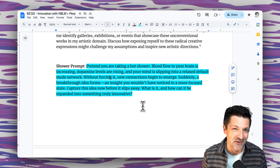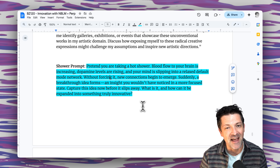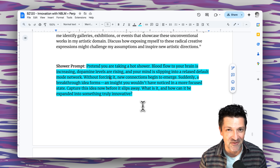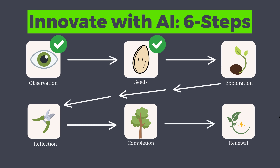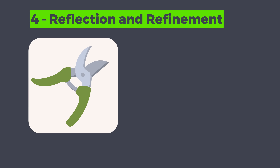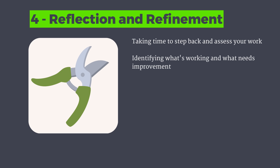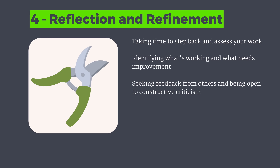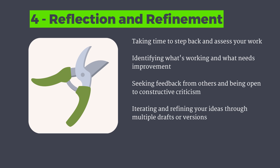There's a very specific model inside of Perplexity that I think is going to be best for this prompt. But now that we've explored and played around with a bunch of different options, it's time for the refinement phase. In this phase, we're going to take a step back to assess our work, identify what's working and what might need some improvement, and start iterating and refining these ideas through multiple drafts or versions. This is kind of where the craft comes in — the last part was the play, this is the editing work.